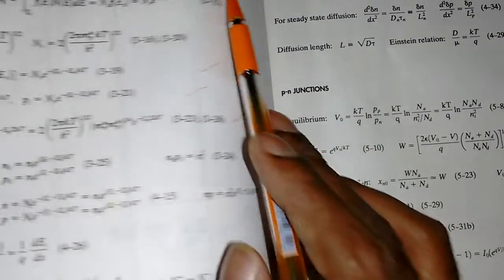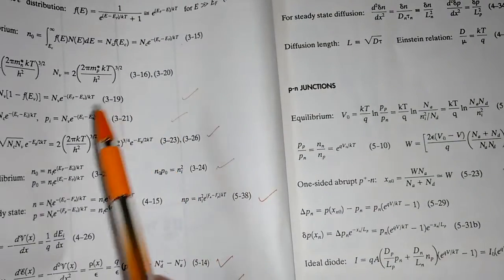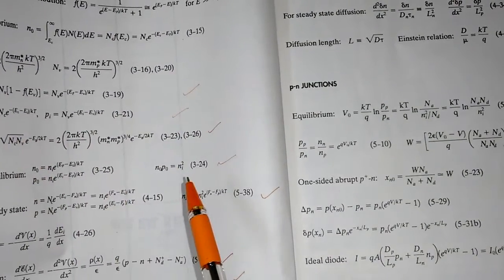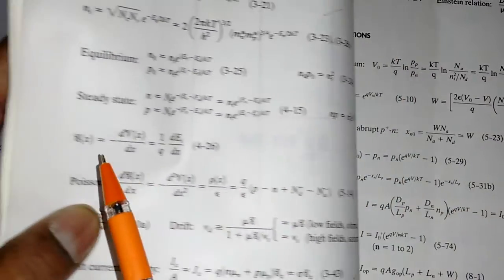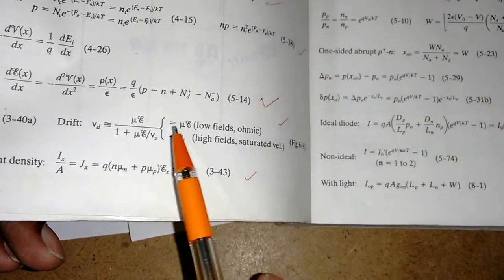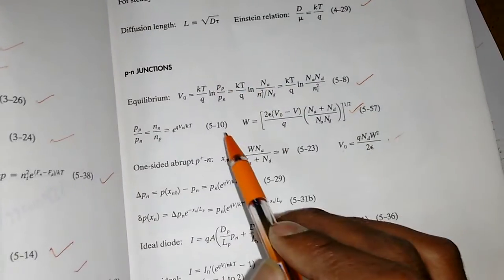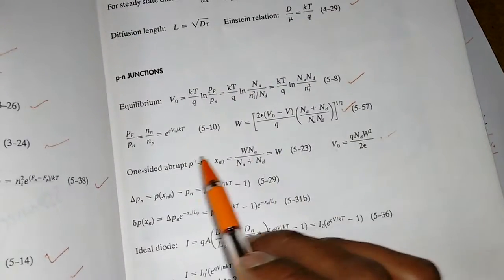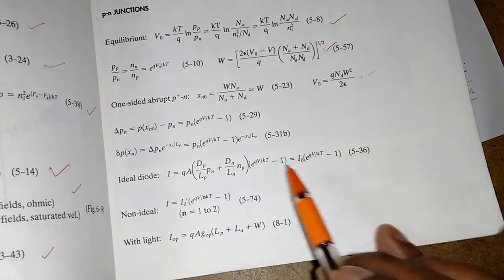Similarly, intrinsic concentration, then what is the Poisson equation, drift velocity versus electric field, then current density, then continuity equation, diffusion length, then PN junctions - there's built-in potential and depletion layer width formulas, then current equations.